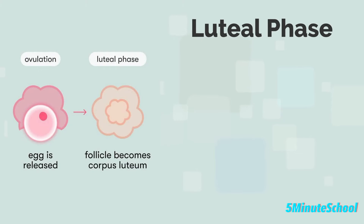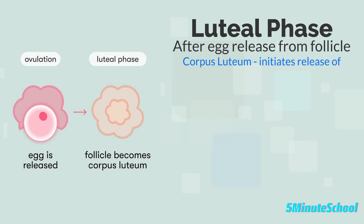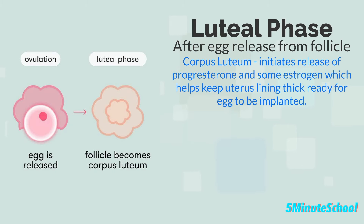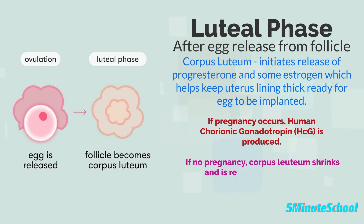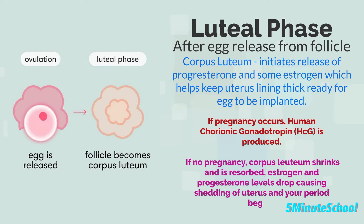The final phase is the luteal phase. After the follicle releases the egg, it turns into the corpus luteum, which releases progesterone mainly, and also some estrogen. This increase in hormones helps keep the uterus lining thick and ready for a fertilized egg to implant. If pregnancy occurs, the body produces human chorionic gonadotropin, abbreviated as HCG — the hormone detected by pregnancy tests. If pregnancy doesn't occur, the corpus luteum shrinks and is resorbed, estrogen and progesterone levels decrease, and the uterus lining sheds, causing the onset of your period.